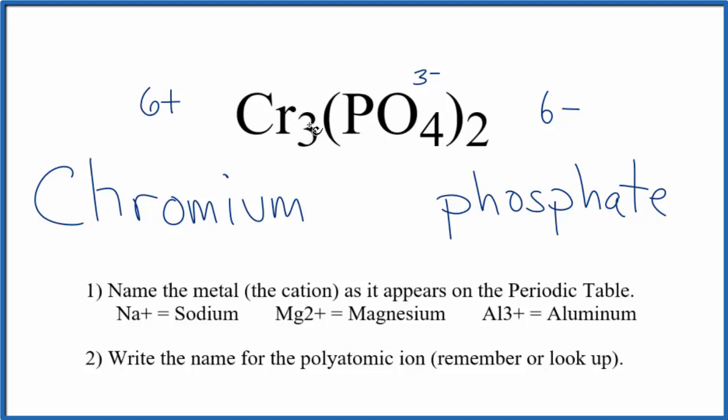Three times some number, that gives us six plus. Three times two plus, that gives us six plus. These two numbers here will balance out, net charge of zero. So the charge on the chromium here, on each one of these chromiums, is two plus. And to show that in the name, we write a Roman numeral two, we put it in parentheses. So the name for Cr3(PO4)2 is chromium two phosphate.